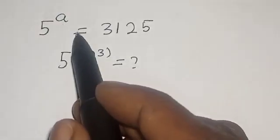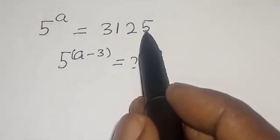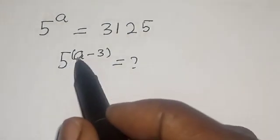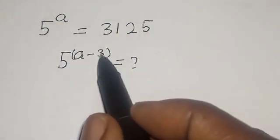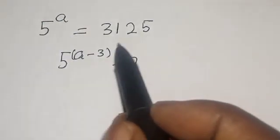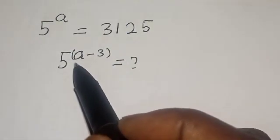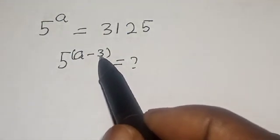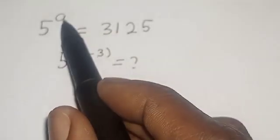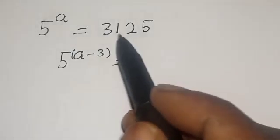5 raised to power a is equal to 3,125. Then what is the value of 5 raised to power a minus 3? Hi everyone, welcome to my class. In this class we want to find the value of 5 raised to power a minus 3, from the given equation 5 raised to power a is equal to 3,125.